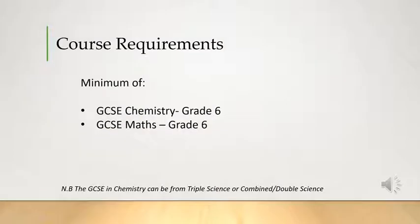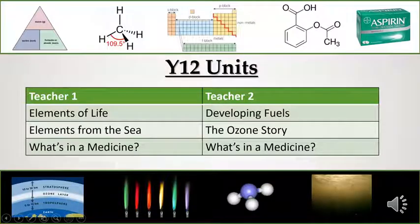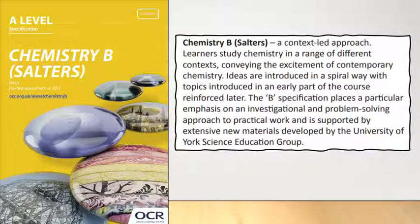In terms of getting on to the chemistry A-level course here, we would require a grade six in GCSE chemistry and also in GCSE maths. In year 12 you'd normally have two teachers and two topics running at the same time. What's really nice about the OCR Salters B syllabus that we follow is that it adopts a context-led approach, so new concepts are introduced in a relevant context.